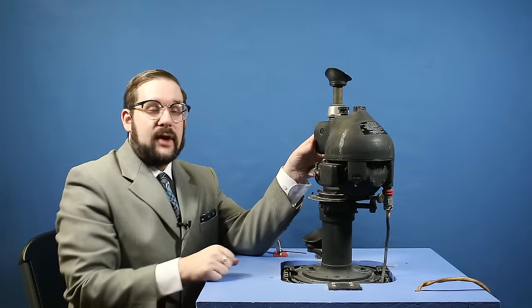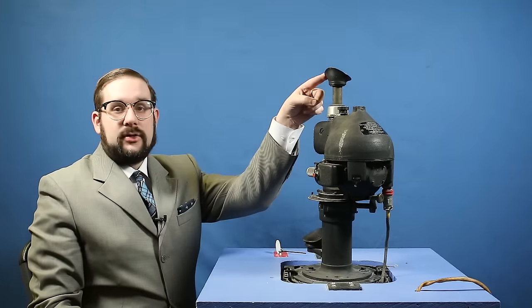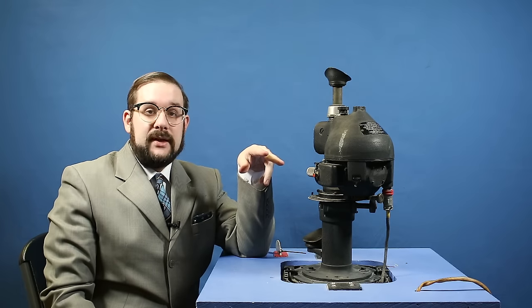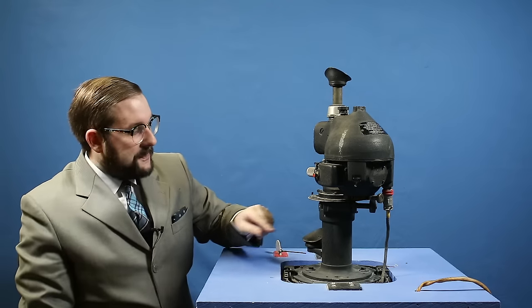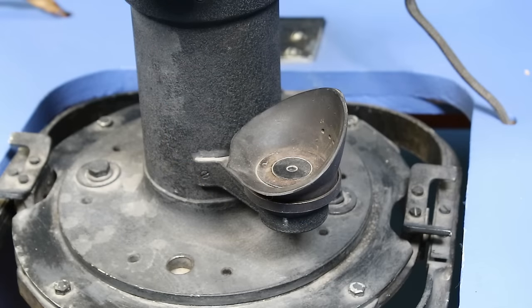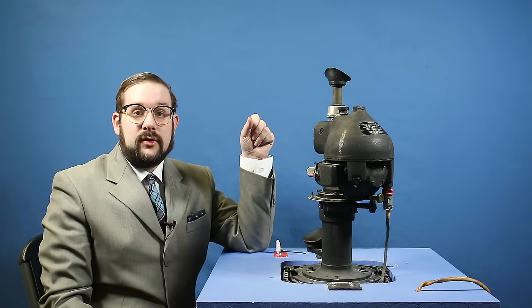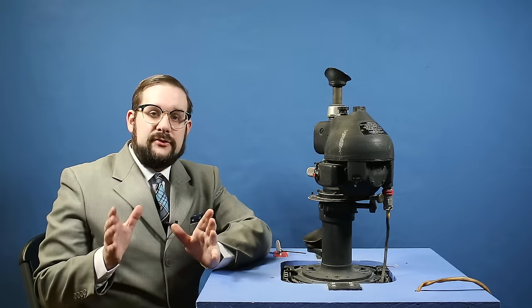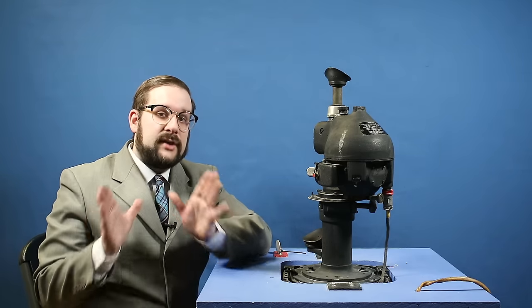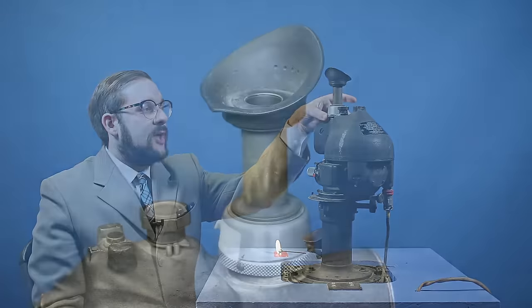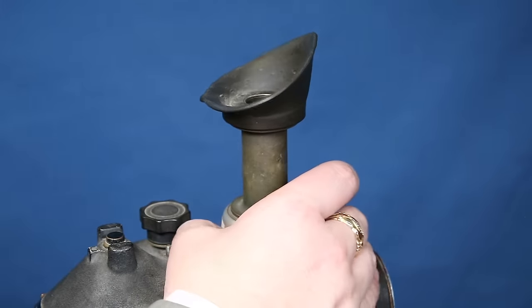Once your gyroscope is up and running you can then look through the eyepiece. This is currently fitted with a one power eyepiece which was standard but you could also swap that out for a three power eyepiece typically mounted on this bracket at the bottom here. Although this gives you a more detailed view of the ground it also reduces your field of view from 25 degrees down to 11 degrees. To adjust the focus on the eyepiece you would rotate this knurled section.